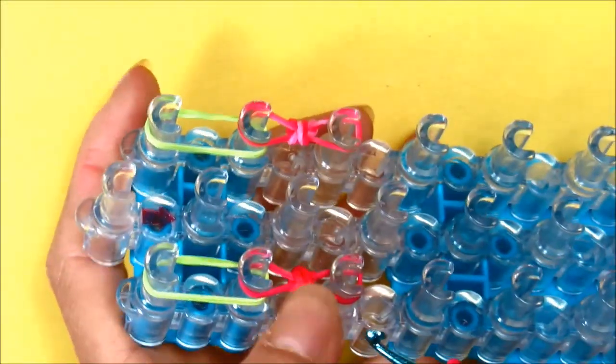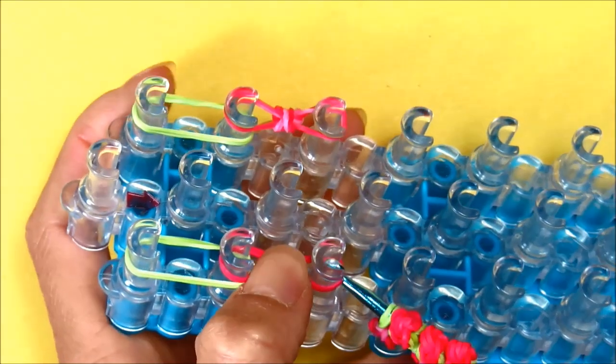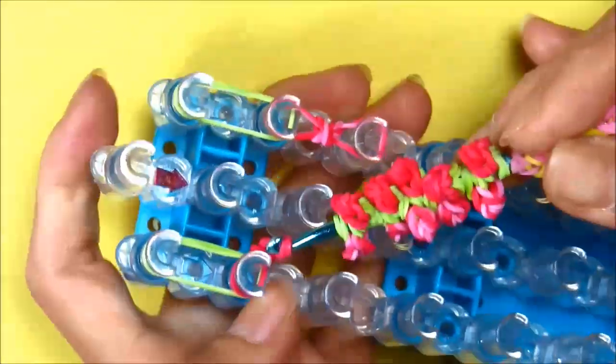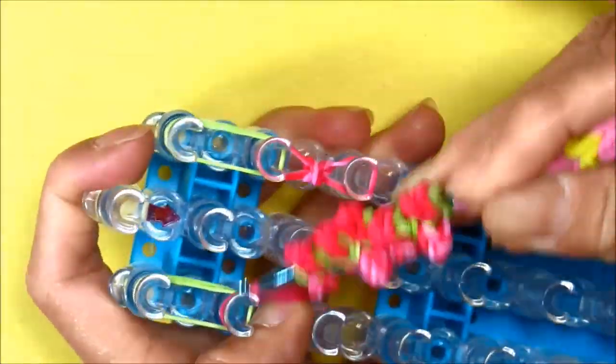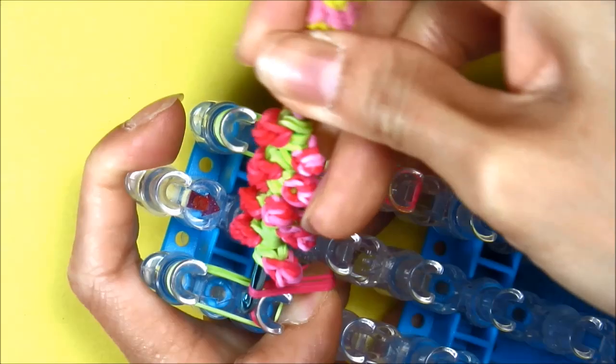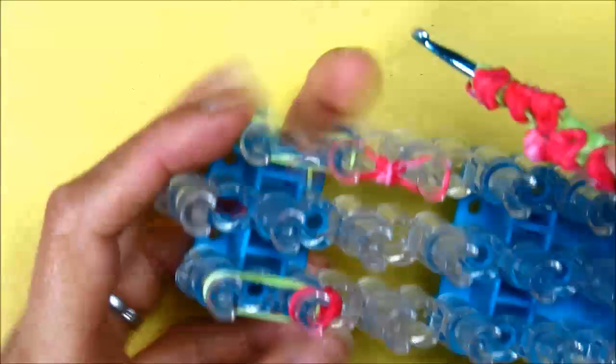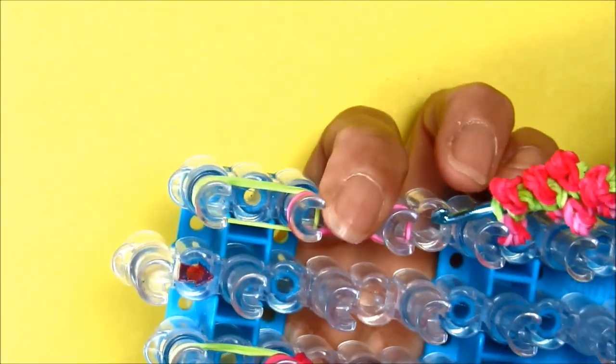We're going to put our finger on the center where the knot is, pull the rubber band off the third peg and loop it right onto the second peg like that. Repeat on the other side.